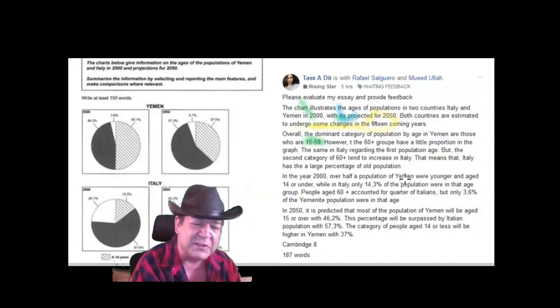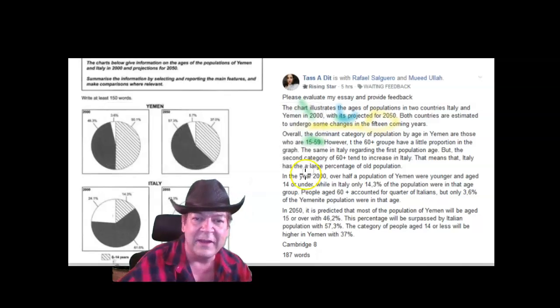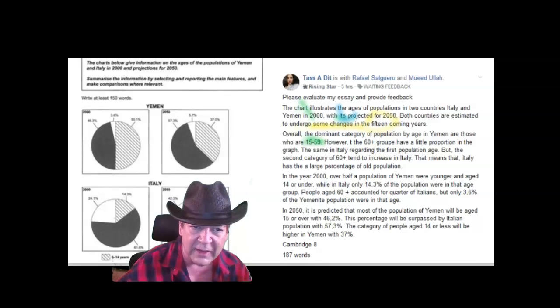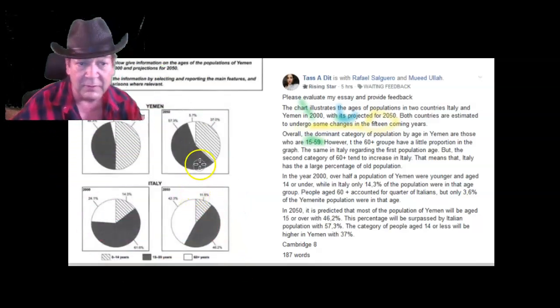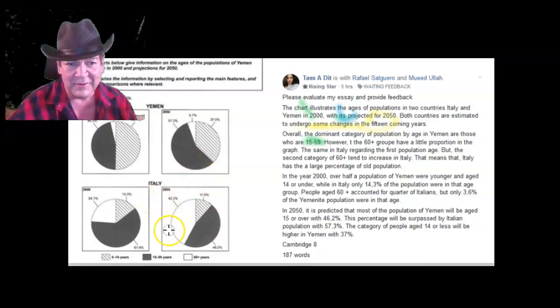The overview is to describe the main information. And you get to it at the end. That means Italy has the... what? And again, make comparisons. So Italy has a larger... well, not larger, they're not bigger, but you know, it has a greater... Italy.